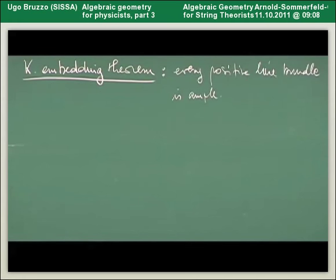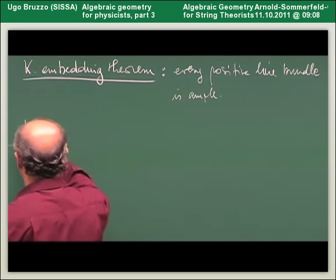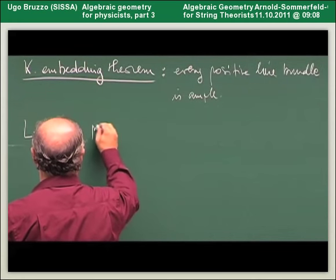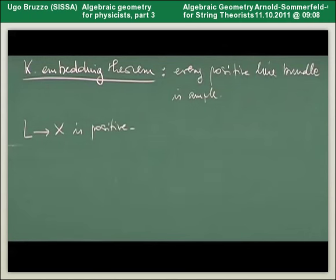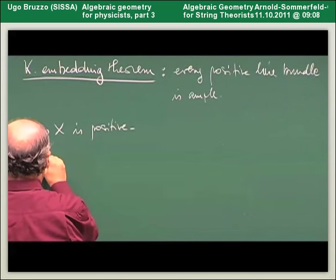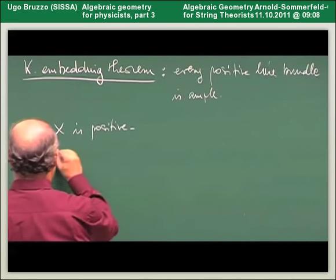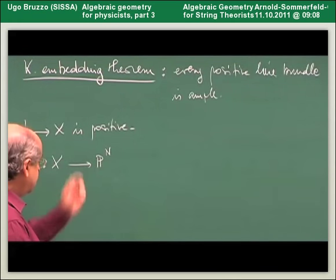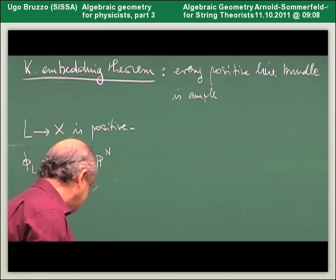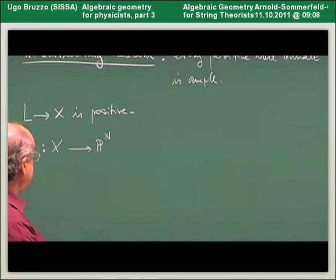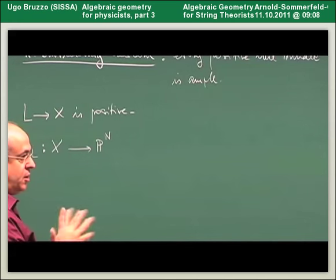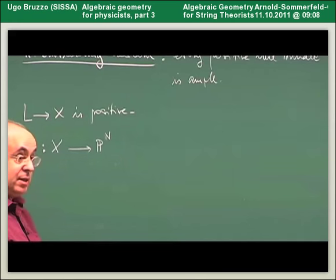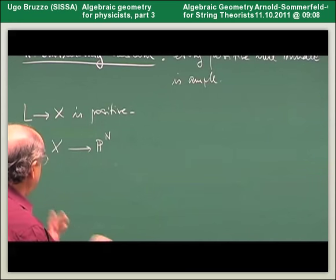Let me notice the following. Suppose that L is positive — so we have an embedding, and N is the number of sections of L minus 1. We know that on P^N there is a kind of tautological line bundle; there is a line bundle or a bunch of them that are naturally defined.